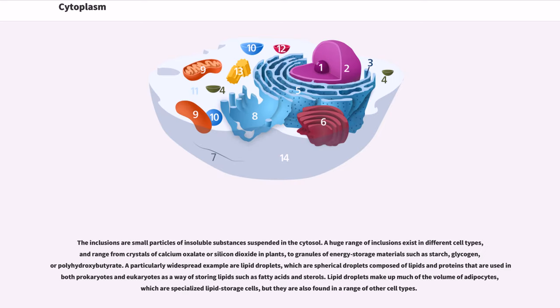The inclusions are small particles of insoluble substances suspended in the cytosol. A huge range of inclusions exist in different cell types, and range from crystals of calcium oxalate or silicon dioxide in plants, to granules of energy storage materials such as starch, glycogen, or polyhydroxybutyrate.